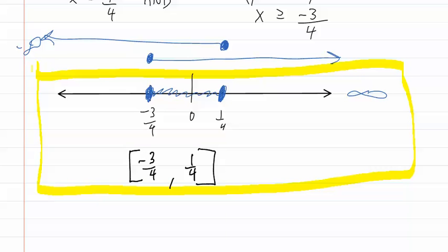Remember, when solving absolute value inequalities, if they are less than, it is an and inequality, which means you copy down the exact same statement without absolute value bars, and then you write the same thing with an inverted sign and a negative.